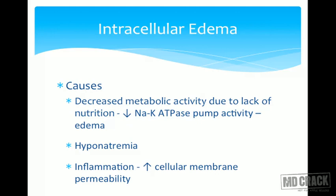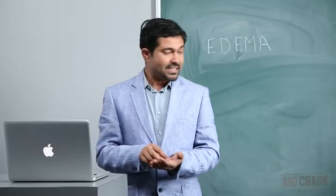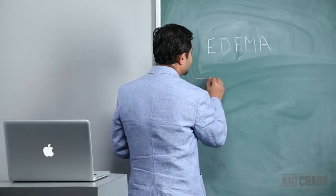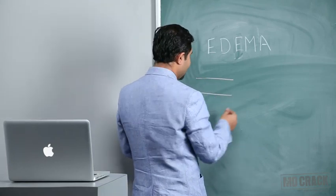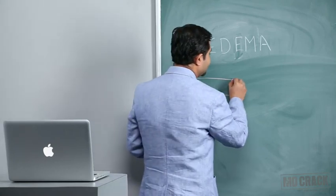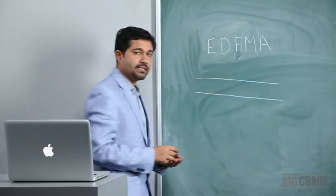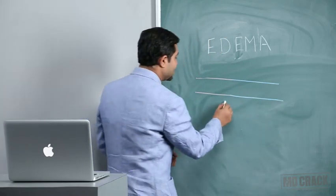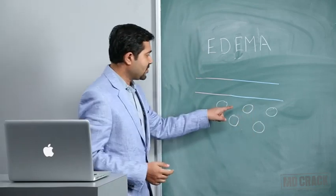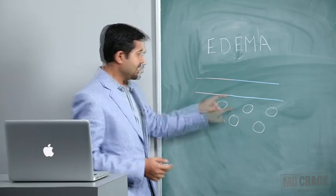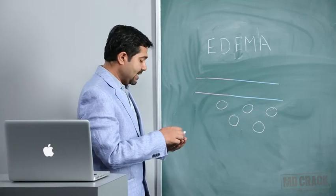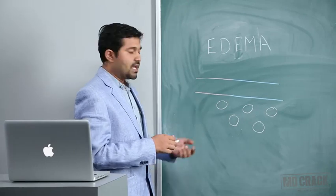To understand the causes of edema, we first have to understand what causes filtration at the capillary end and what causes absorption at the venous end of the capillary. This is the arterial end of the capillary, this is the venous end, and these are the cells. This phase will be called the interstitium.